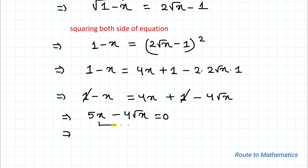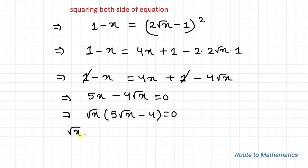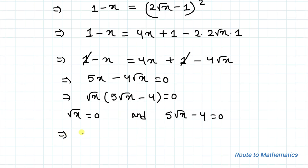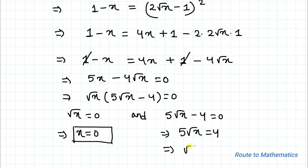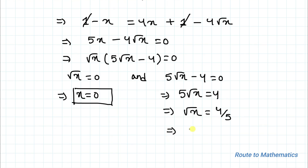Taking √x common from these two terms, we have √x(5√x − 4) = 0. From here we can write √x = 0 and 5√x − 4 = 0. So x = 0 is one solution. For the other solution: 5√x = 4, so by cross multiplication √x = 4/5. Squaring both sides gives x = 16/25.